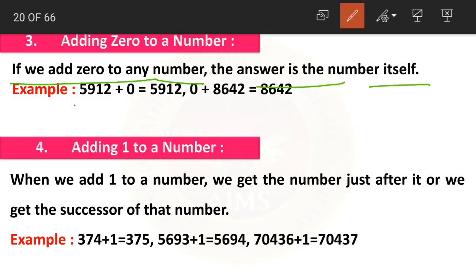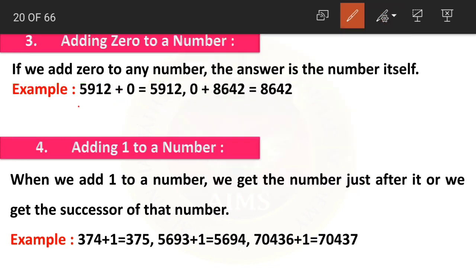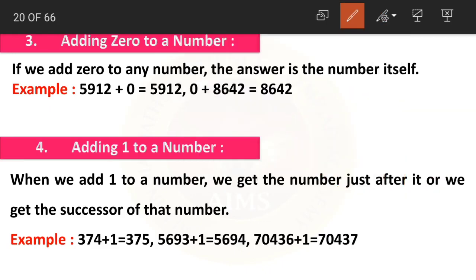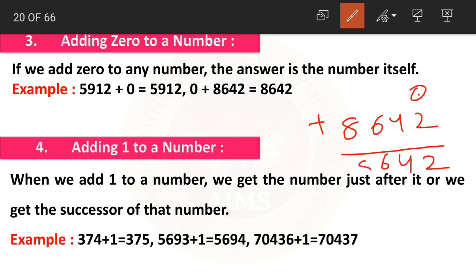This is the easiest of all additions. Whenever any number is given with zero for addition, you need not perform the addition — simply write the number itself. For example, 5,912 plus 0: working through each digit, 2+0=2, 1, 9, 5 — we get 5,912, the same number. And 0 plus 8,642 gives 8,642, again the same number.